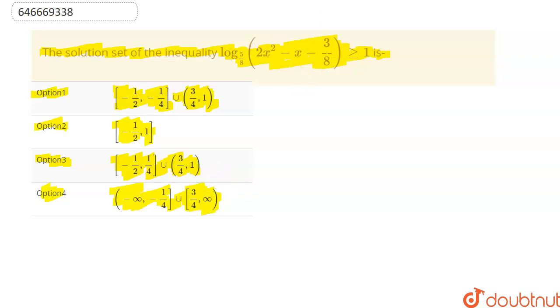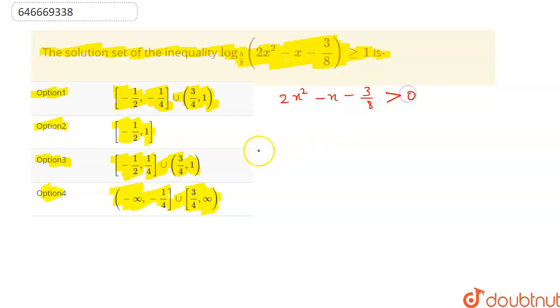Let's solve this question. By the definition of logarithm, we know that the quantity inside the log is always positive. So 2x² - x - 3/8 must be greater than 0. Taking LCM, this becomes 16x² - 8x - 3 must be greater than 0.